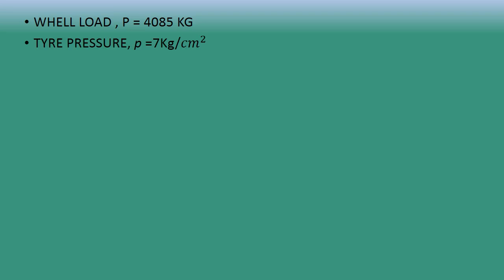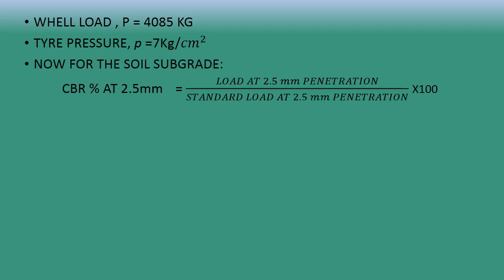The given values are: wheel load P = 4085 kg and tire pressure p = 7 kg per centimeter square. For the soil subgrade, the load values at the given penetration values are already provided in the question, so we will now find out the CBR value.